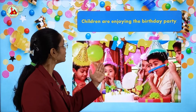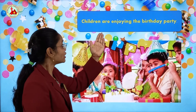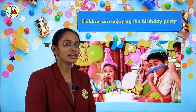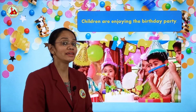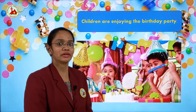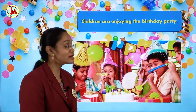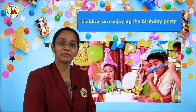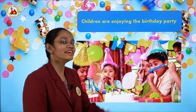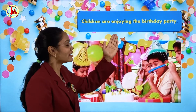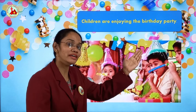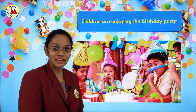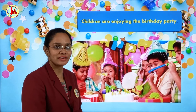Our next point is: children are enjoying the birthday party. What else do we see in the birthday party? All the children enjoy the birthday party. So our next point is children are enjoying the birthday party. You can see the children are enjoying the birthday party.